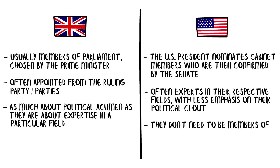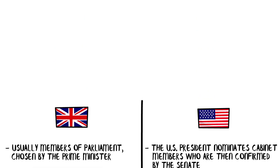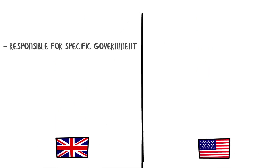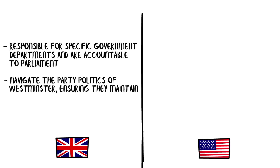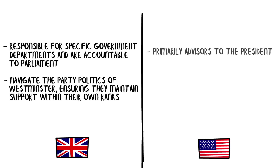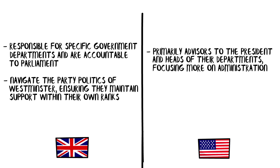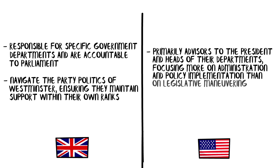Interestingly, US cabinet members don't need to be members of Congress and often aren't. The US president nominates cabinet members who are then confirmed by the Senate — individuals often chosen as experts in their respective fields, with less emphasis on political clout. British cabinet members are accountable to parliament and must navigate Westminster party politics, whereas US cabinet members are primarily advisors to the president, focusing more on administration and policy implementation than legislative maneuvering.